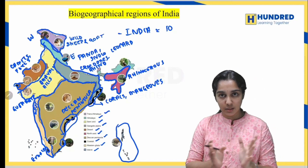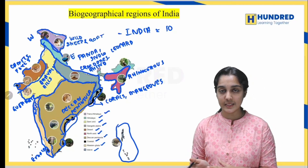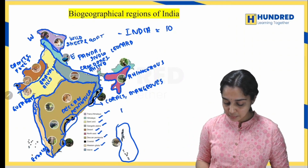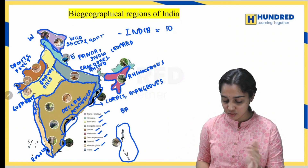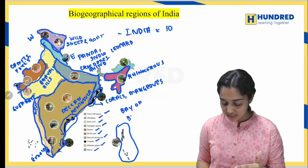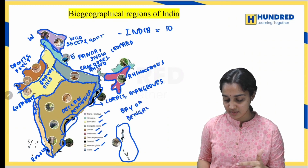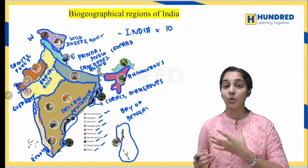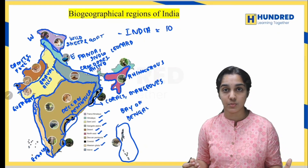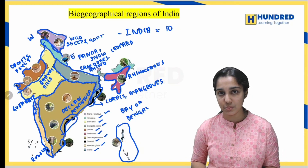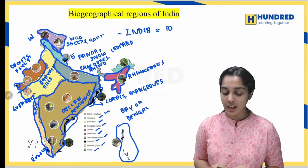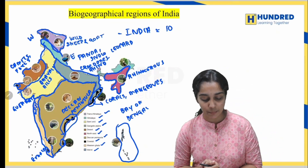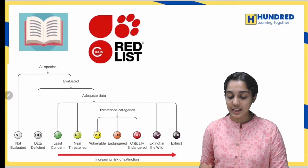Finally, the islands zone — this is the Andaman and Nicobar Islands, present in the Bay of Bengal. Since it is an aquatic ecosystem, a wide variety of corals and aquatic species are present here. This completes the 10 biogeographical zones of India.